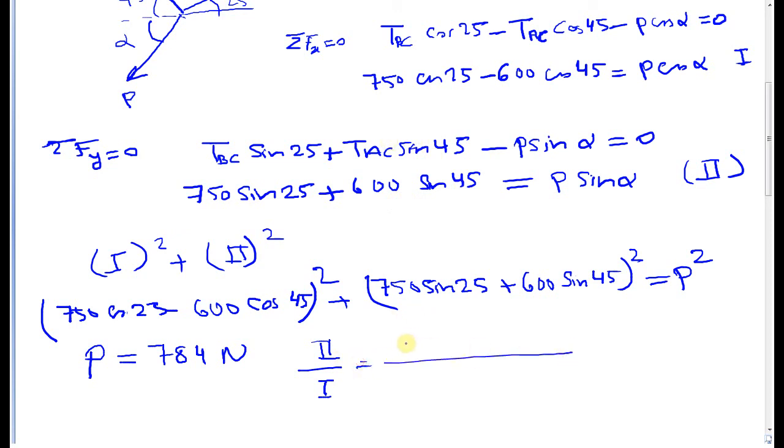So 750 sine 25 plus 600 sine 45 over 750 cosine 25 negative 600 cosine 45 is equal to tan alpha. So alpha will be 71 degrees.